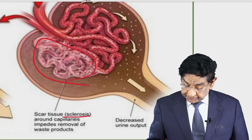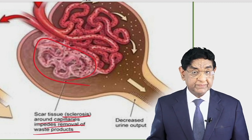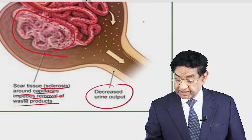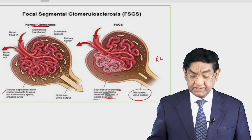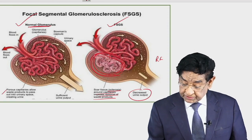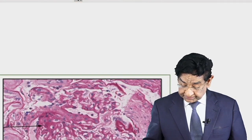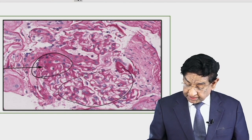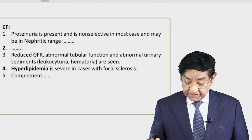That segmental involvement leads to sclerosis around the capillaries, impeding removal of waste. A part of the glomerulus not working will reduce kidney function, leading to decreased urine output and potentially renal failure. You can nicely compare the normal versus the FSGS-affected glomerulus — the involved part versus the normal part.